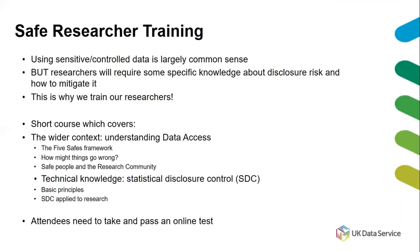The safe researcher training is designed around the basis that using sensitive controlled data is pretty much all about common sense — so if you've got a bit of common sense, you're going to be absolutely fine. However, there are some bits of specific knowledge you will need around disclosure risk and how to mitigate it, and a lot of researchers won't have that specific knowledge unless they've worked with controlled data before. It's a short course — currently online — and it lasts about three to three and a half hours, depending on the group.